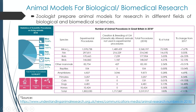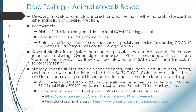You can see different species and animals employed in biomedical or biological research. Keeping in view these numbers, anyone can predict that research in biomedical sciences and biological sciences is almost impossible without animal models. For drug testing, different diseased models of animals are used.